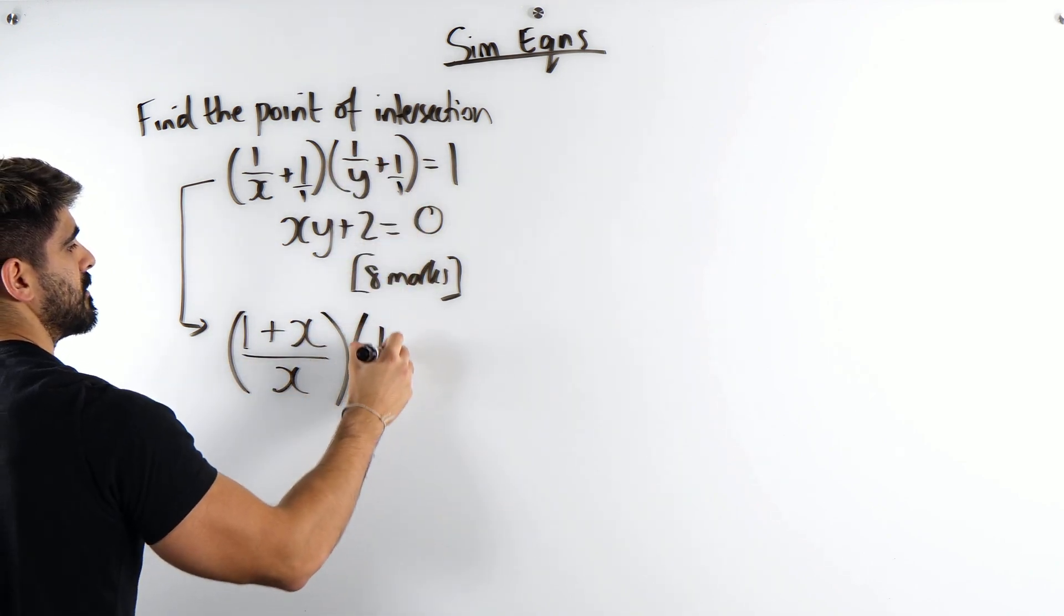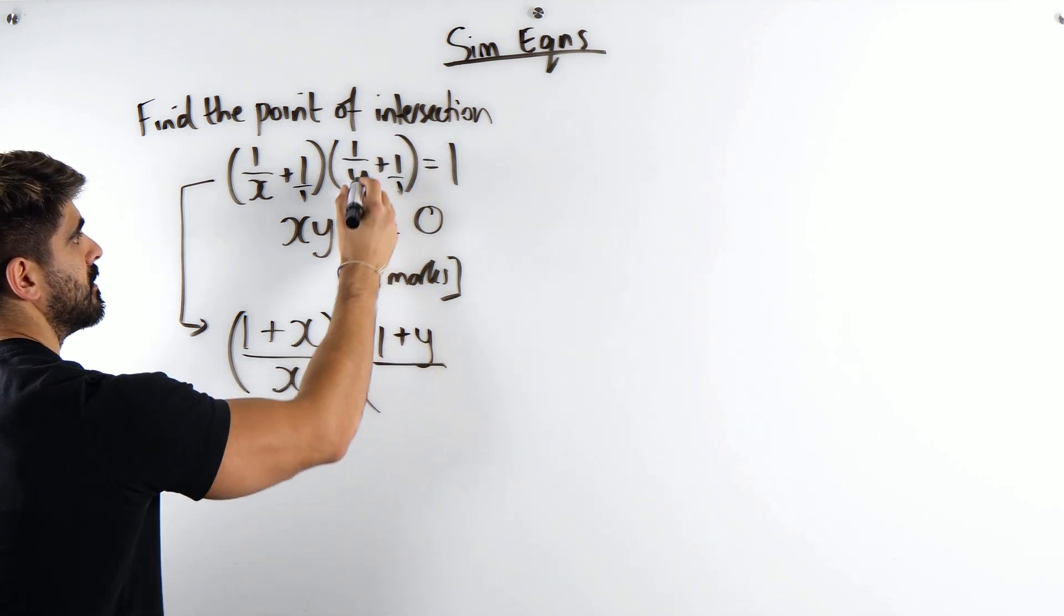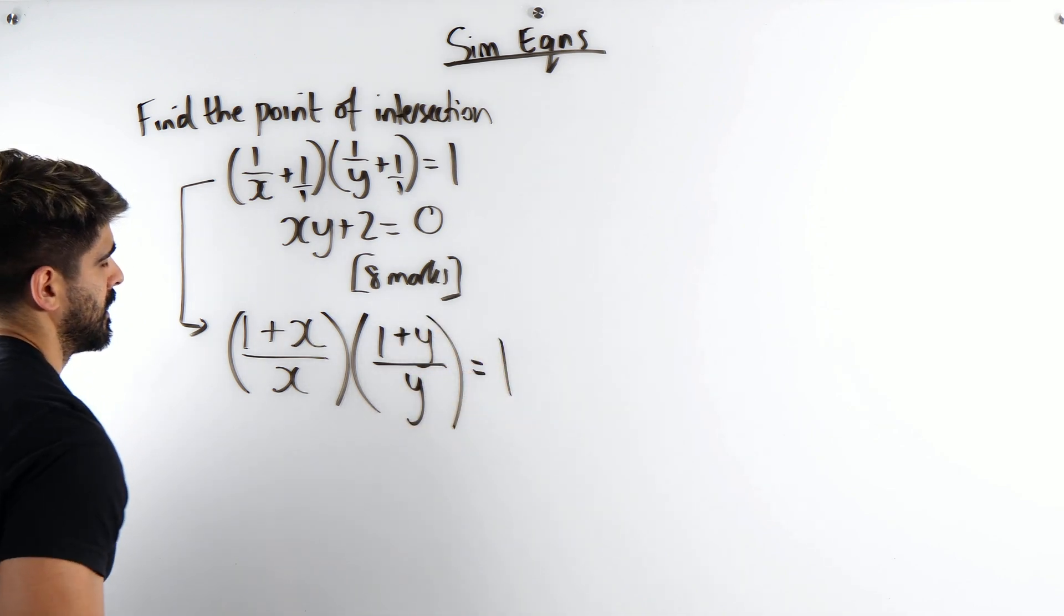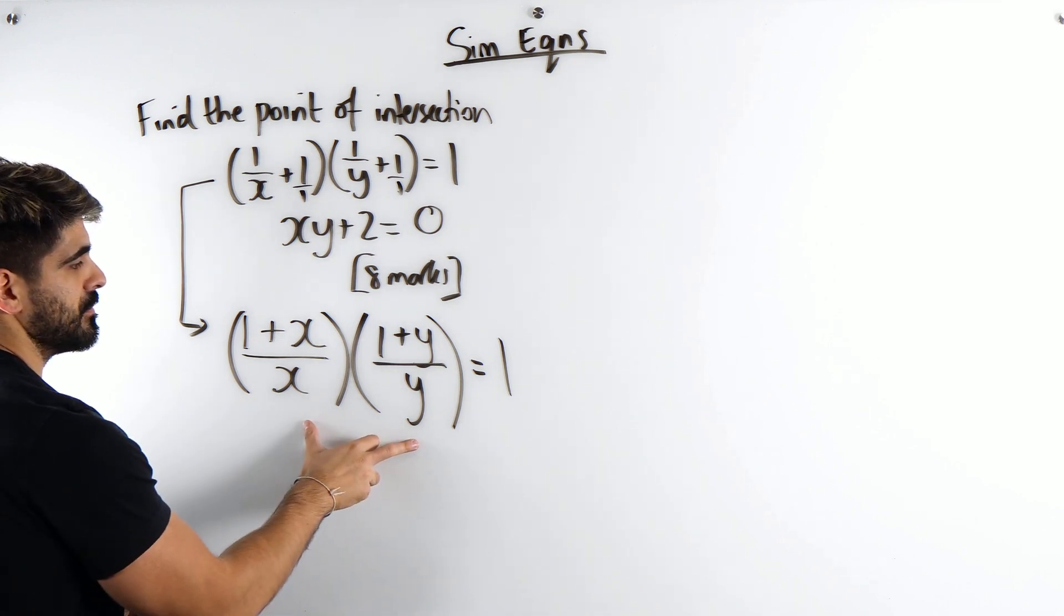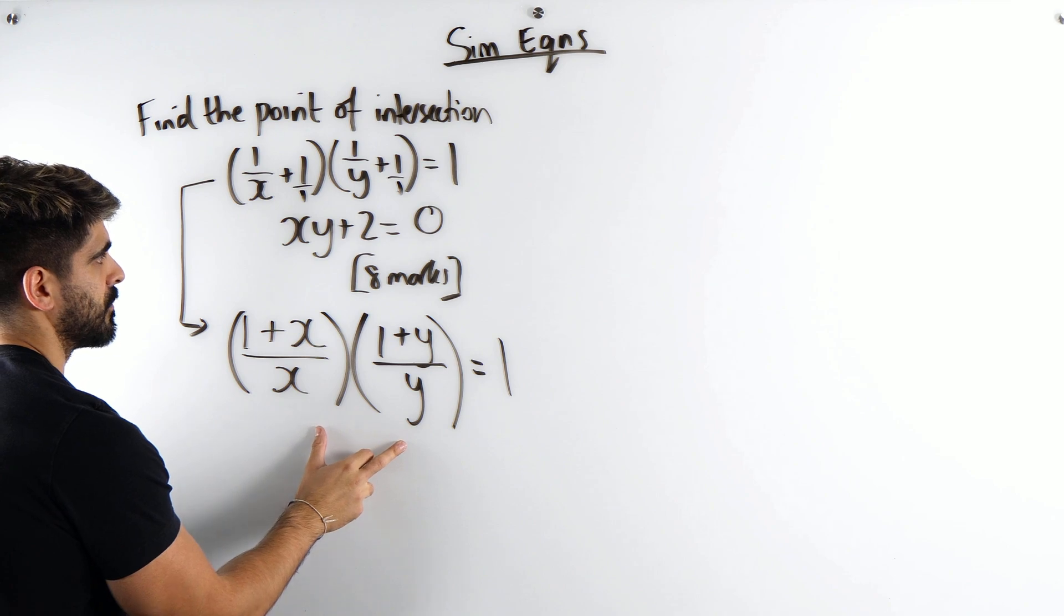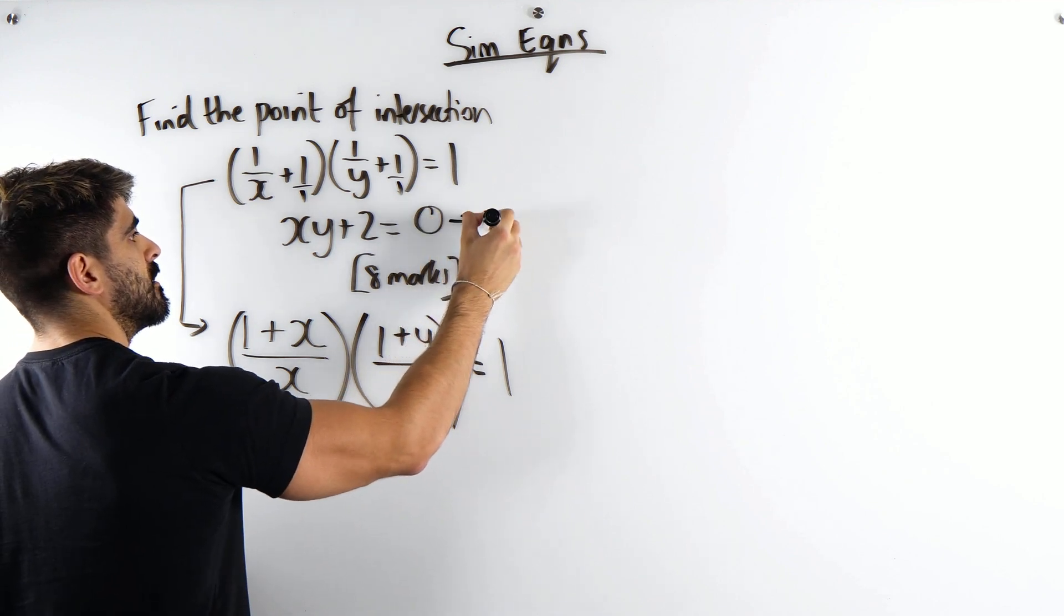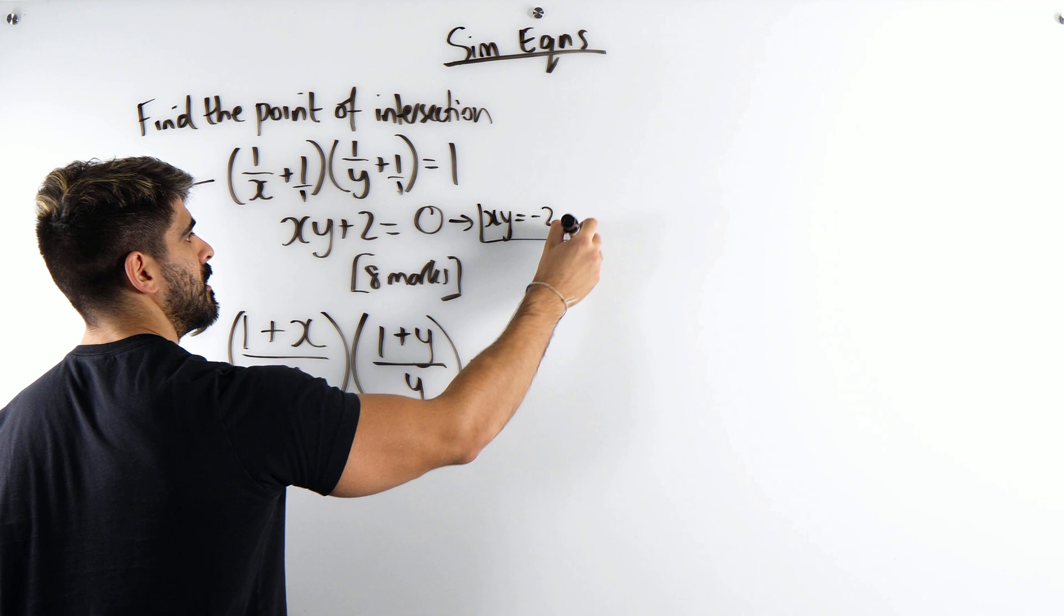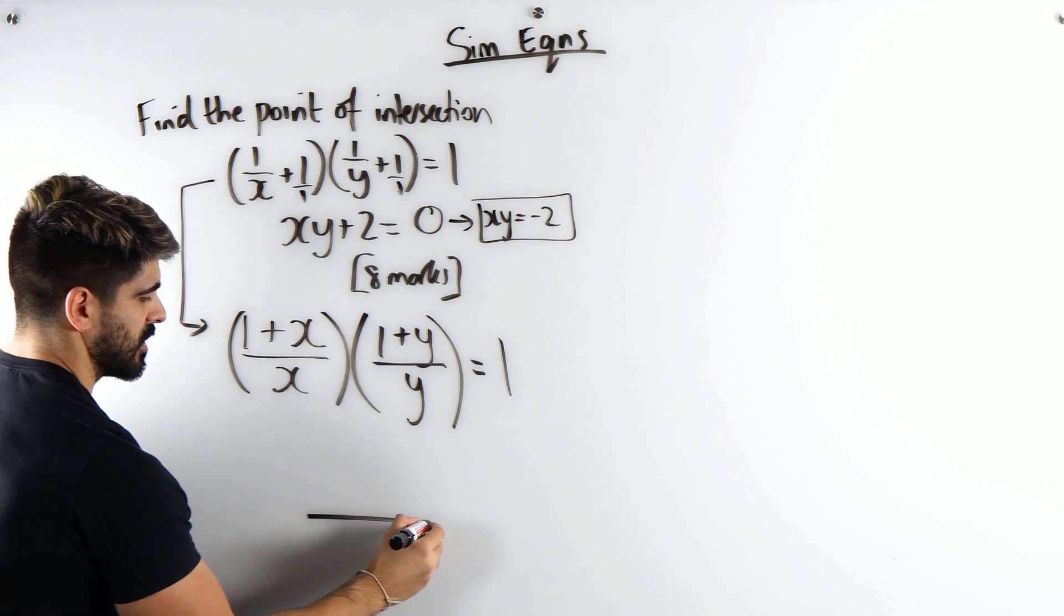Okay, then doing the same thing, 1 times 1 plus y times 1 is y, divided by y times 1 is y, is 1. Then we multiply the top and the bottom, and the cool thing about this is in the bottom you're going to get x times y. But I know x times y is minus 2 if you move that 2 over.